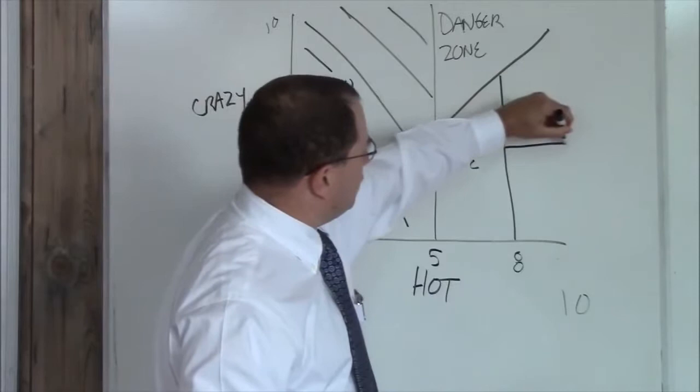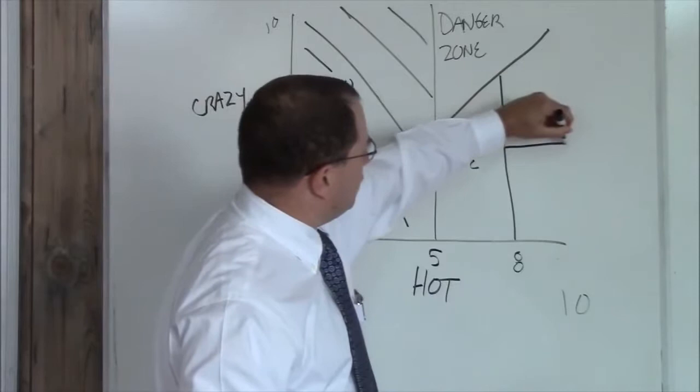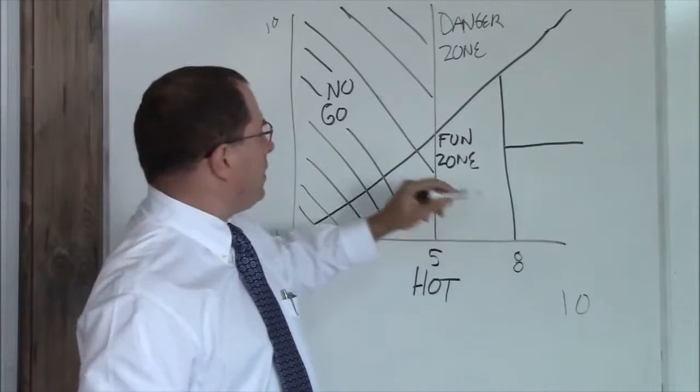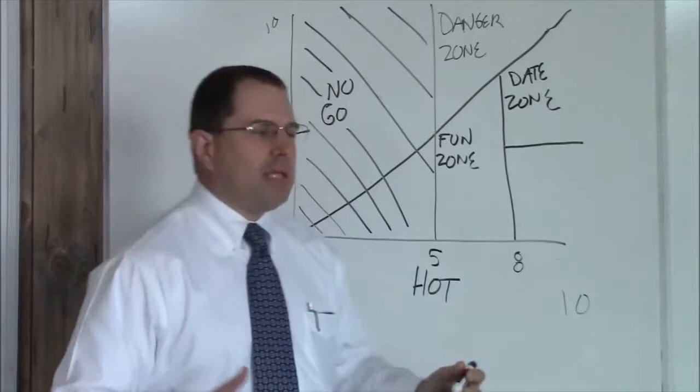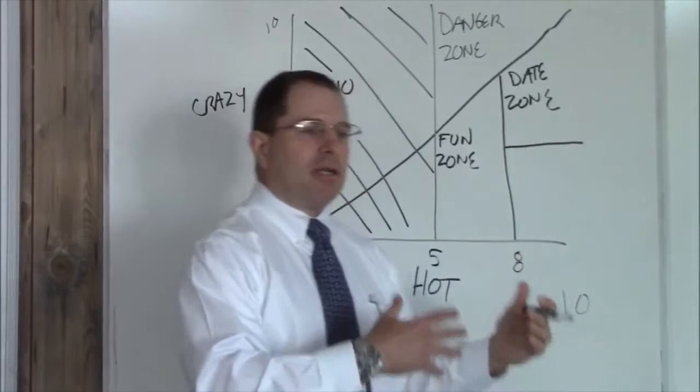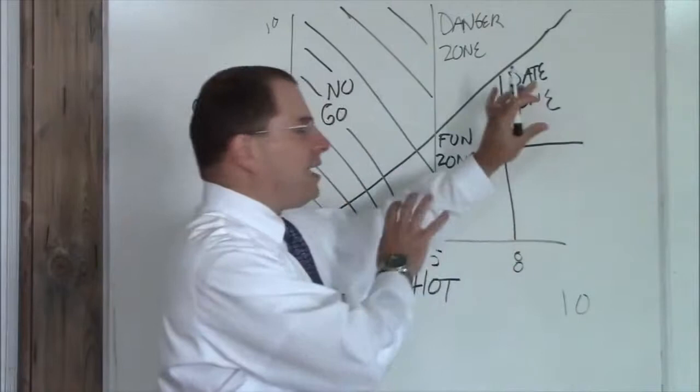Now, moving on, you have this zone here. This is below the crazy line, above an eight hot, but still, you know, about a seven crazy. This is your date zone. You can stay in the date zone indefinitely. These are women that you introduce to your friends and your family. They're good looking, and they're reasonably not crazy most of the time. So this you can stay here indefinitely.